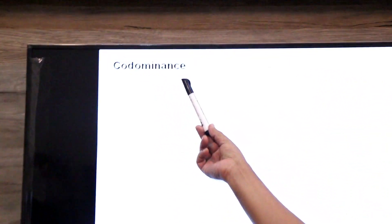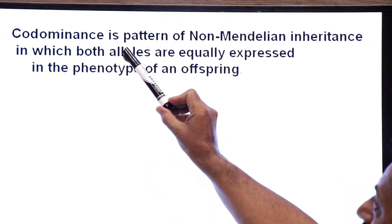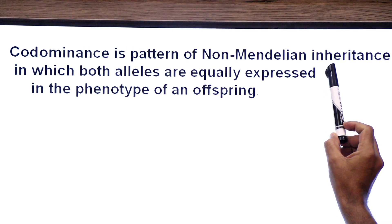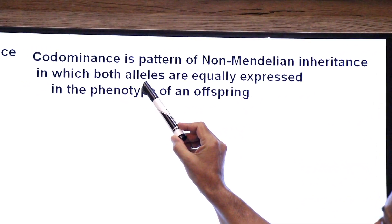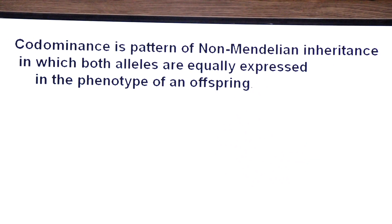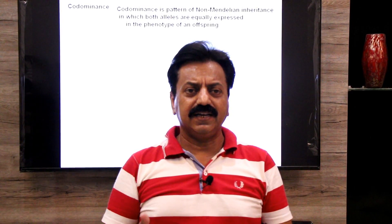Hello dear students, welcome back to our inter-biology classes. Today we are going to talk about codominance. Codominance is a pattern of non-Mendelian inheritance in which both alleles are equally expressed in the phenotype of an organism. Definition में लिखा गया है कि codominance का inheritance non-Mendelian trait है।